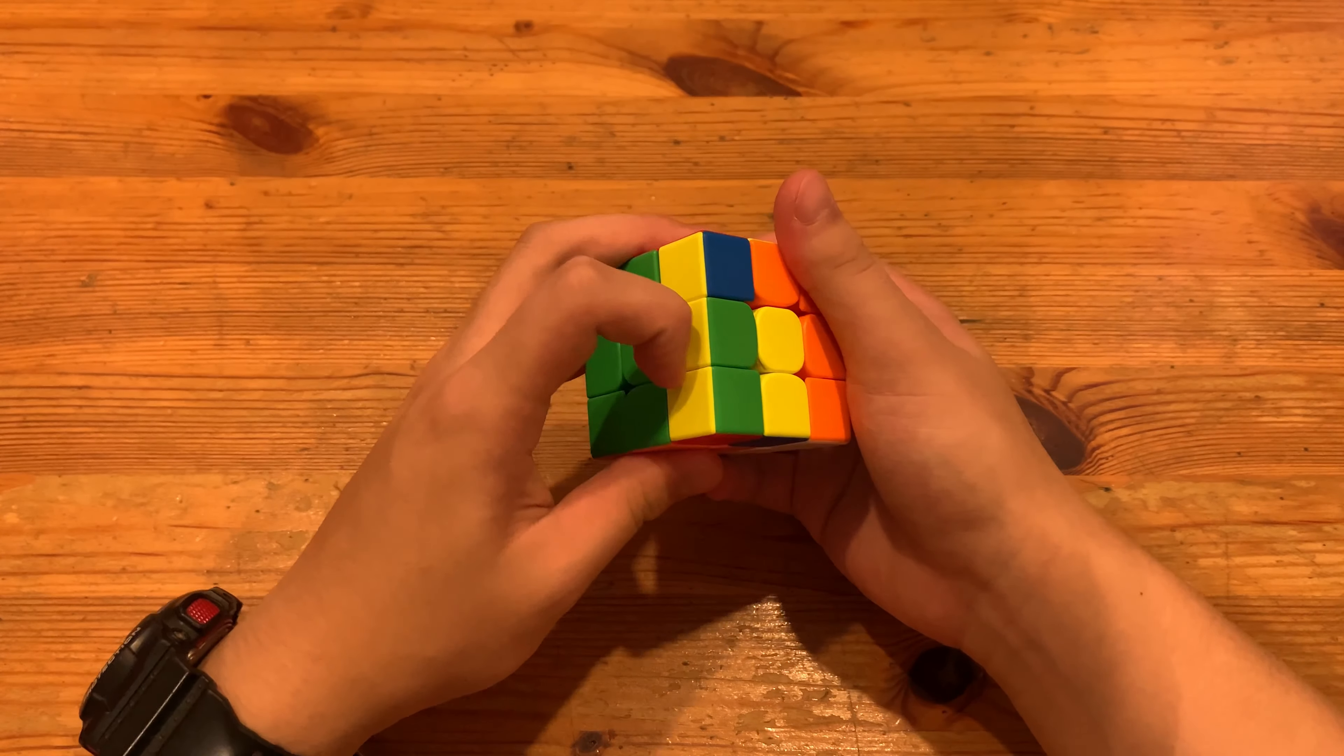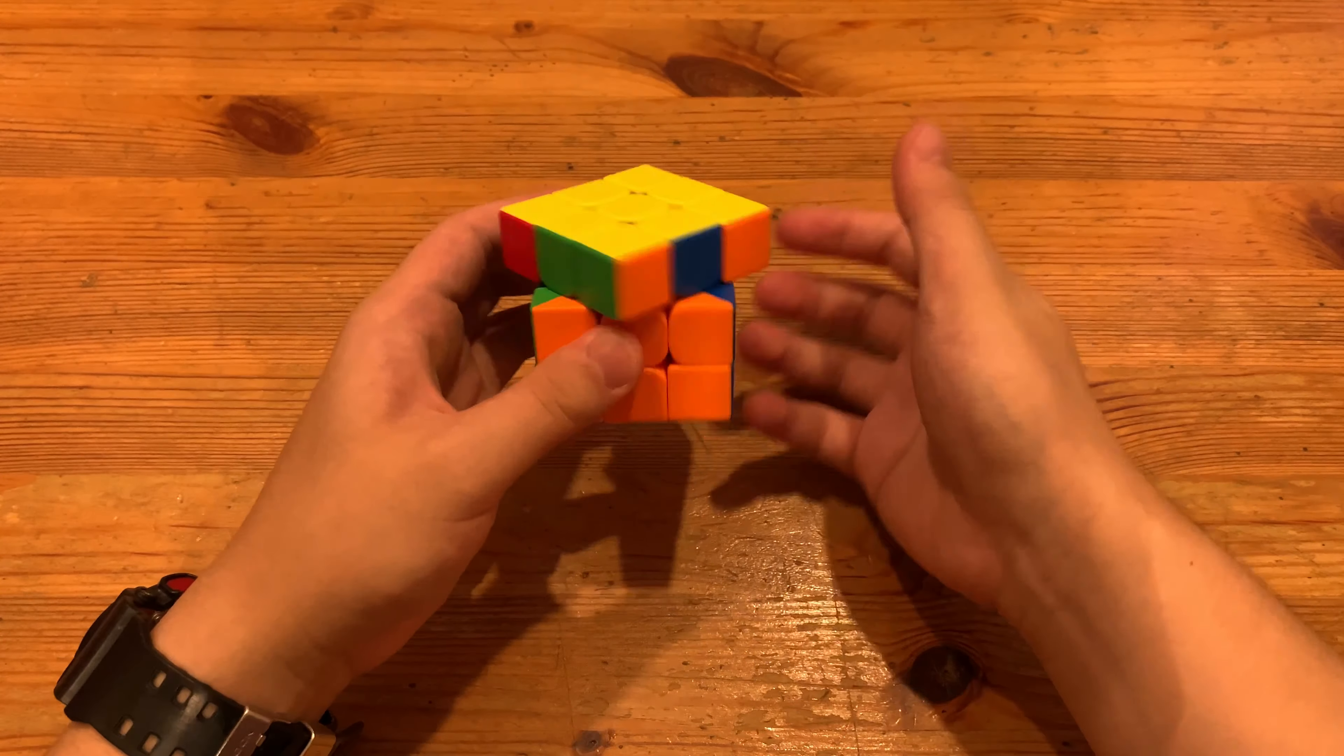Rotate, insert this pair, and OLL, followed by R perm.